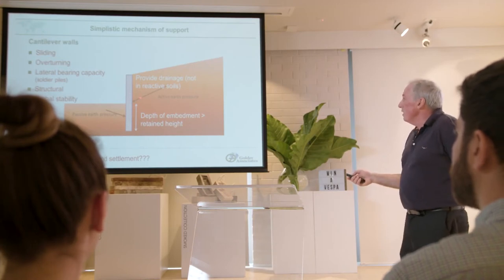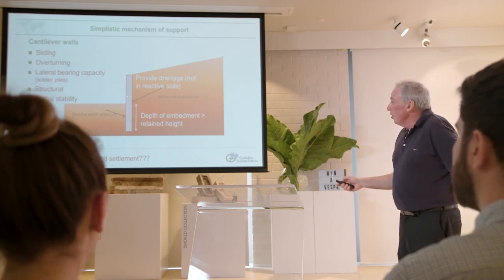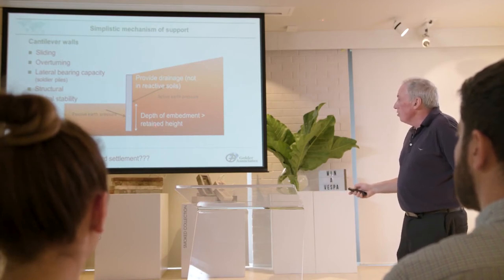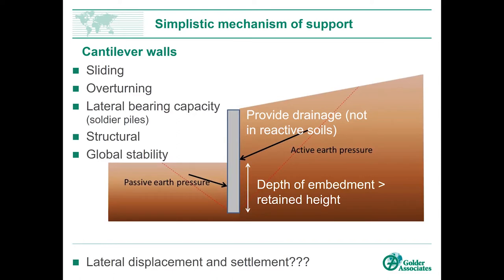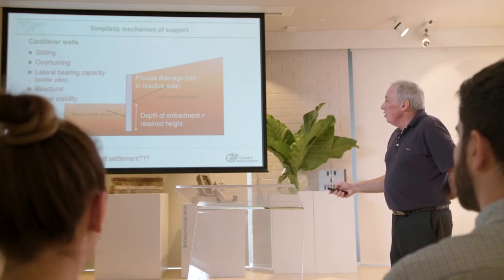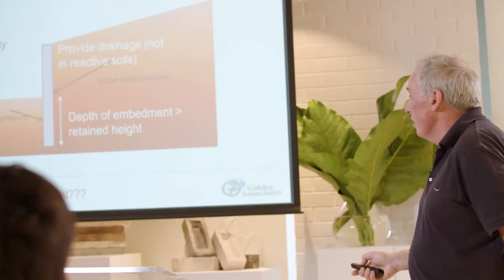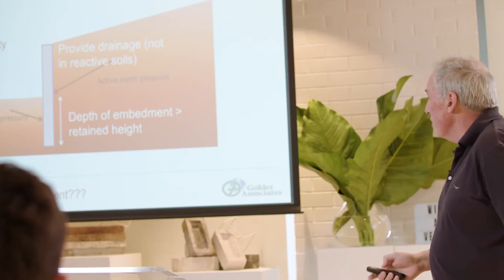Embedded cantilever walls develop a passive earth pressure wedge at the toe which resists the active earth pressure wedge above. The depth of embedment needs to be greater than the retained height — you should rarely have embedment significantly less than retained height unless you're in rock. The same checks apply: sliding, overturning, lateral bearing capacity so the soldier piles don't move out, the structural strength of the wall, global stability, and lateral displacement and settlement.